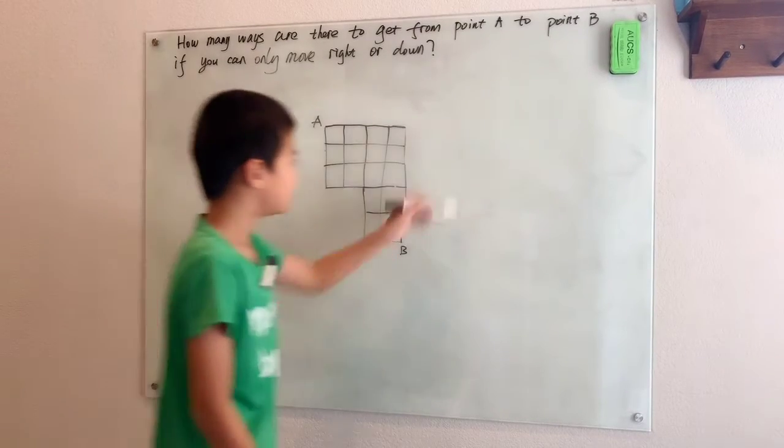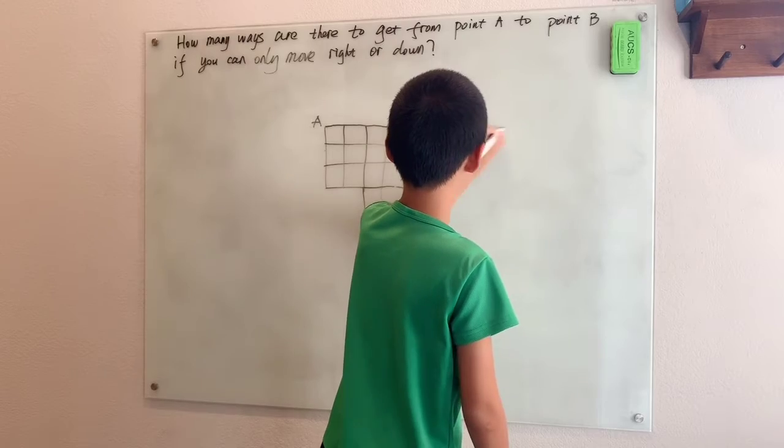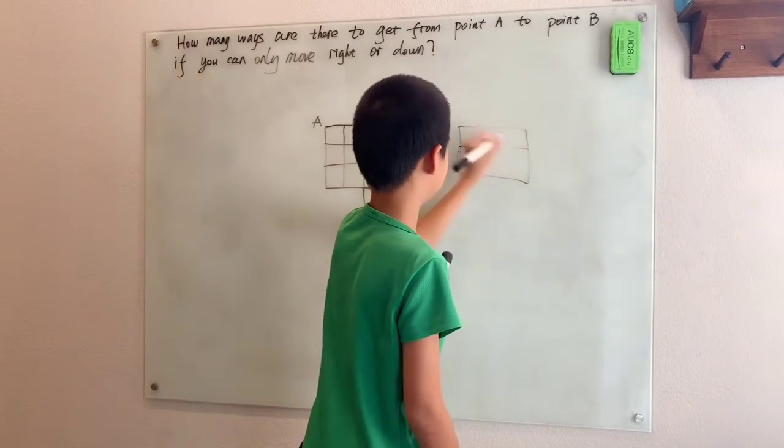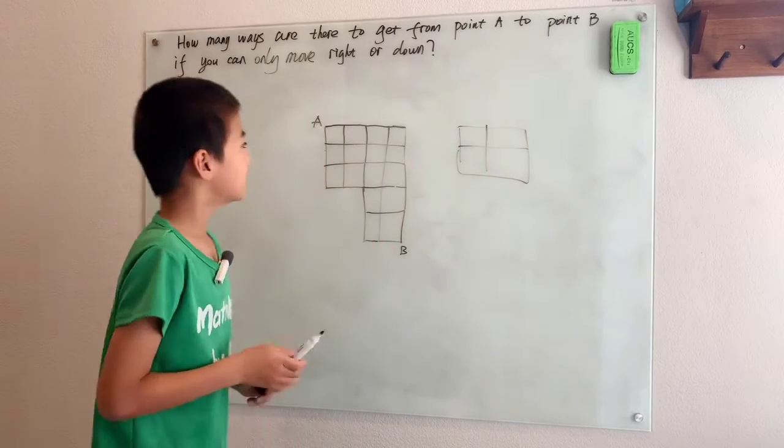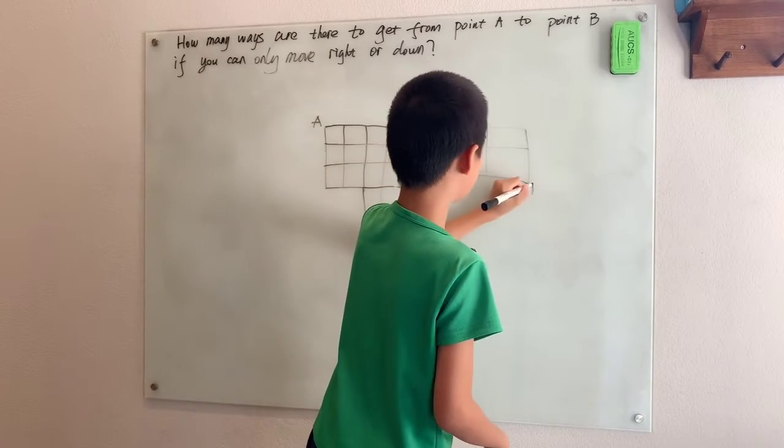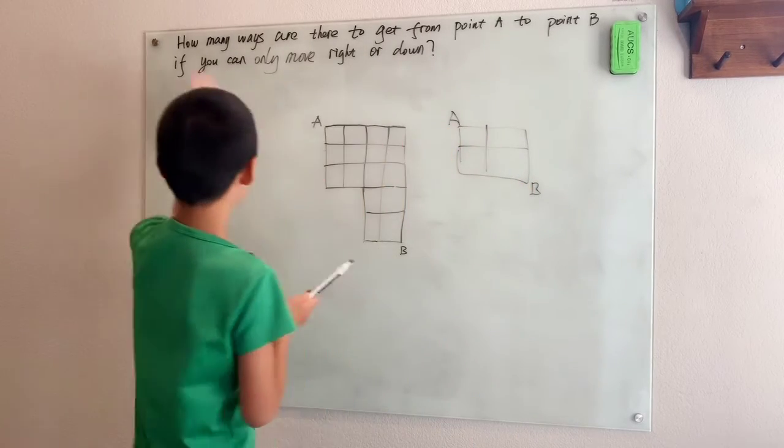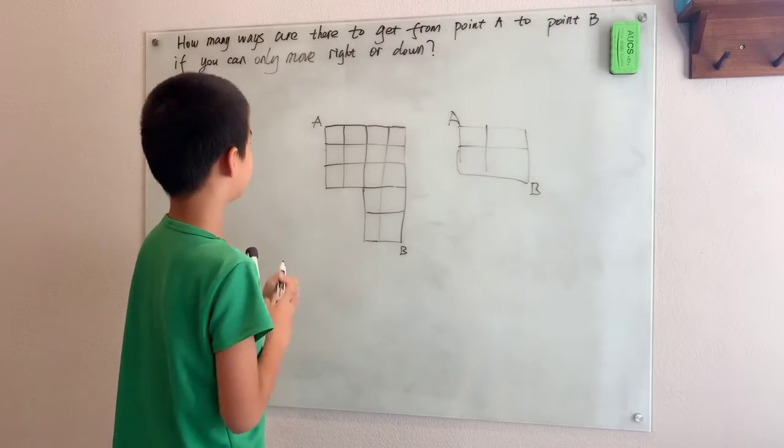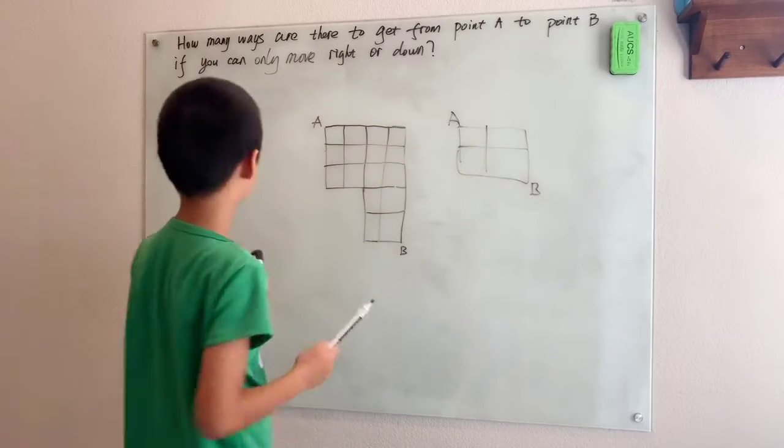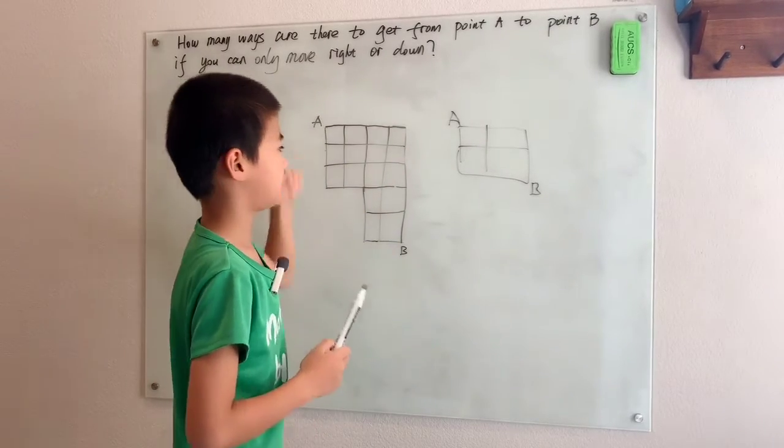Usually we can find a much simpler problem, like a two by two square. So again same thing happens from point A to point B, and we want how many ways are there to get from point A to point B if we can only move right or down.